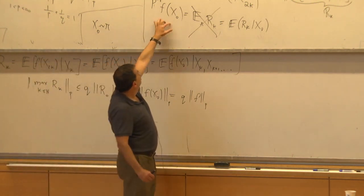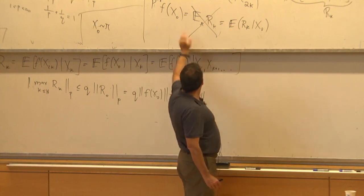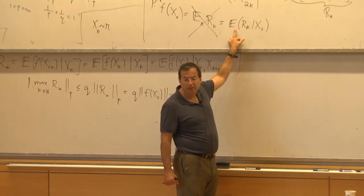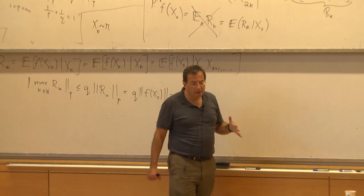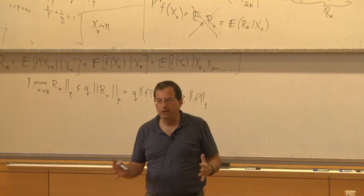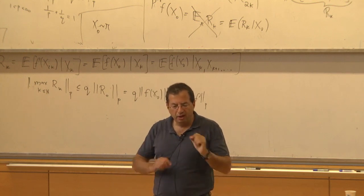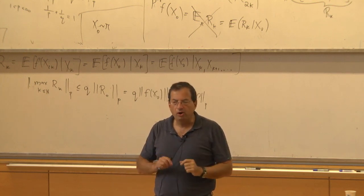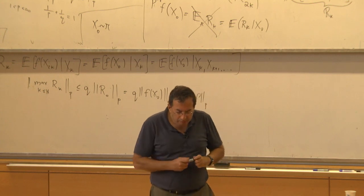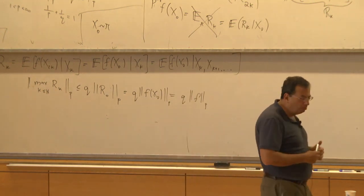It just follows from what we checked and this conditional expectation. So all this is really just three or four lines, but it's a confusing three or four lines with a lot of moving parts. But it turns out remarkably useful.